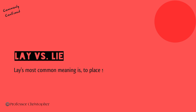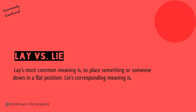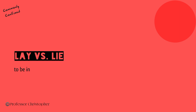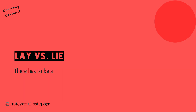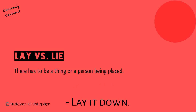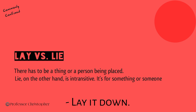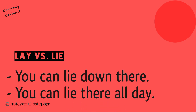Lay's most common meaning is to place something or someone down in a flat position. Lie's corresponding meaning is to be in a flat position on a surface. Lay is transitive — it requires that the verb have an object. There has to be a thing or a person being placed: lay it down. Lie, on the other hand, is intransitive. It's for something or someone moving on their own, or something or someone that's already in position: you can lie down there, you can lie there all day.